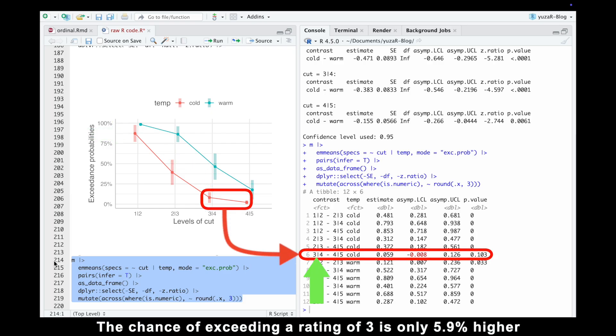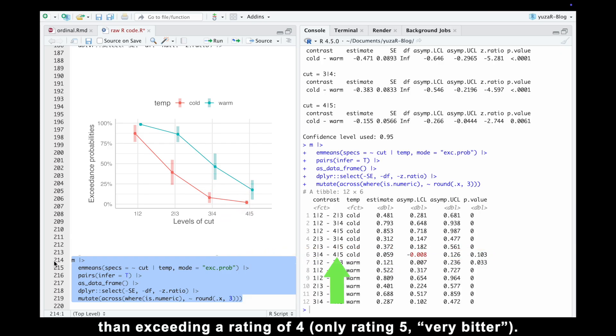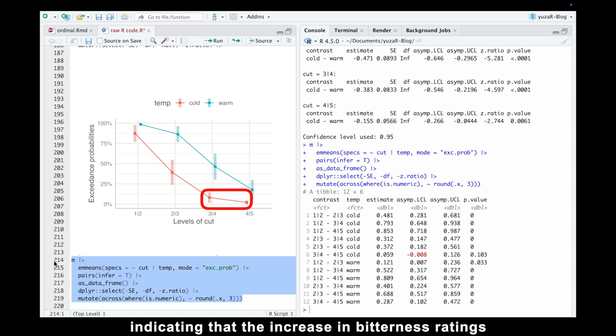The chance of exceeding a rating of 3 is only 5.9% higher than exceeding a rating of 4. This difference isn't statistically significant, indicating that the increase in bitterness rating begins to fade at higher thresholds.